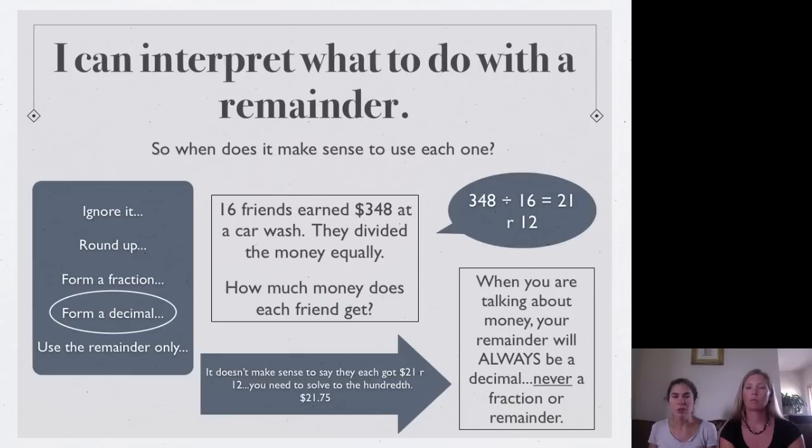No. So, what you have to do is, you need to solve to the hundredth. So, what that would mean is, you would just have to keep extending this 348 and add your decimals and zeros. And actually get more of a number instead of a remainder here. So, you'd keep bringing down to end up with something like this. This makes more sense.